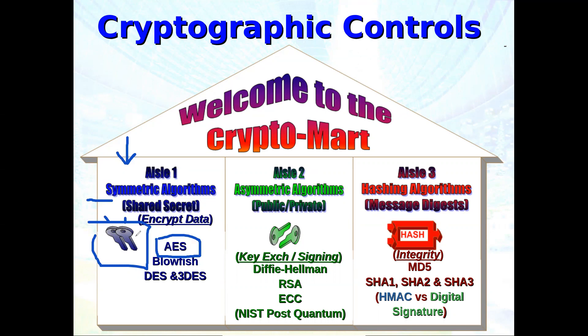But you can't put in a safe the key to the safe. Symmetric keys are data encryption keys. Asymmetric keys — at least when they first came out from Whitfield Diffie and Hellman — are key encrypting keys. That's what you use: the public key of the receiver to encrypt that.